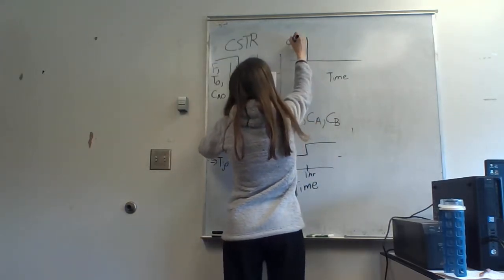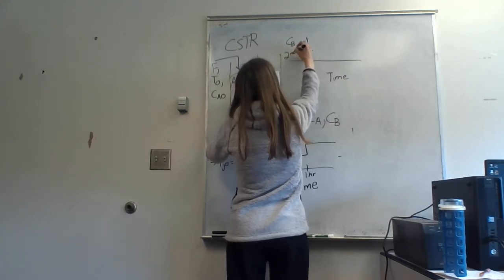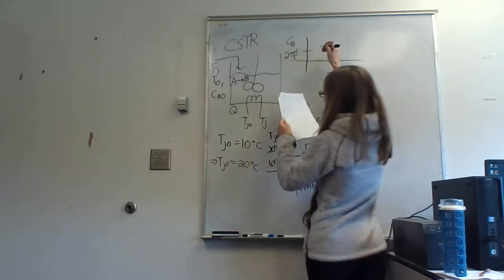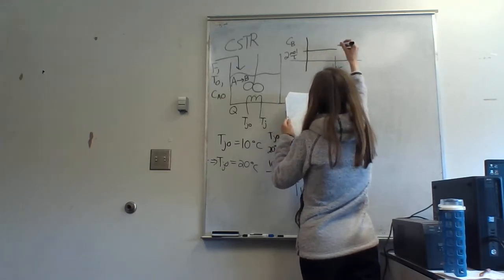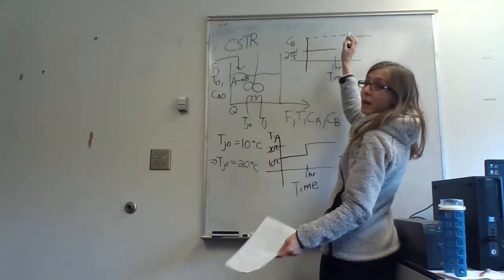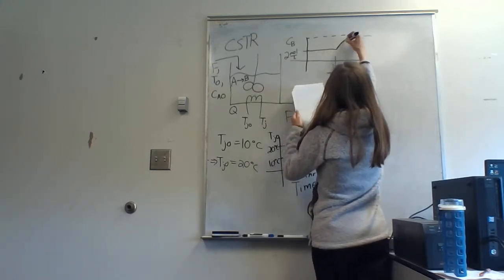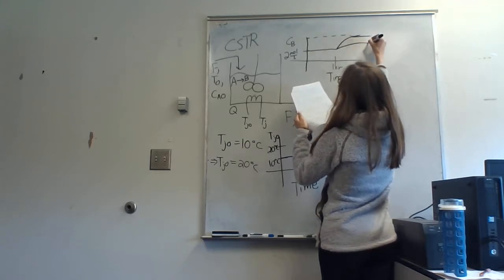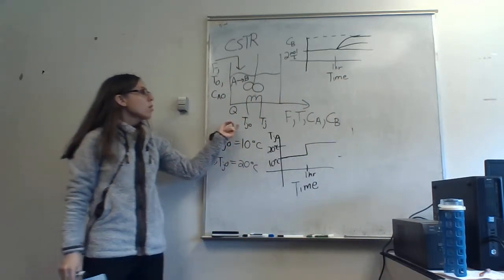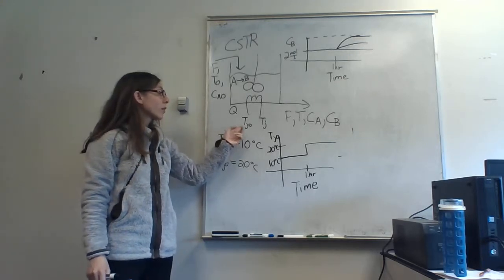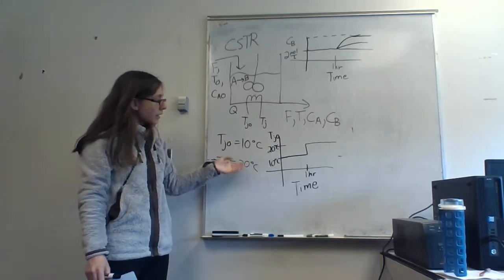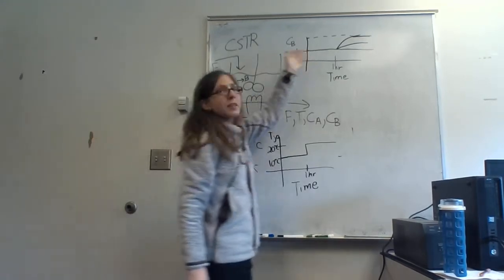Say that here's one hour when Tj0 got changed. Initially I'm along some steady state, and then here's the new steady state value that gets set up when the temperature changes to 20°C. Maybe I go there really fast, maybe a little slower. Ideally I didn't want any change. If I'm operating this process, what I'd like is for my CB to not change even though my heating or cooling stream temperature just changed unexpectedly.